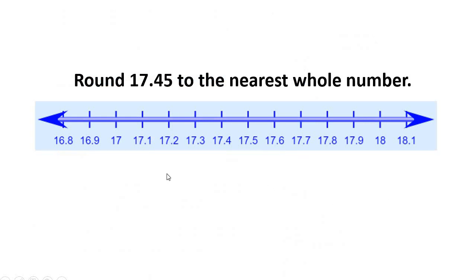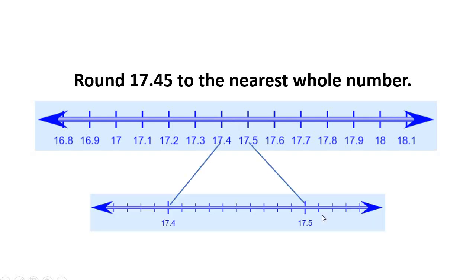Let's try another one. We're going to round seventeen and forty-five hundredths to the nearest whole number — using the number line first. This number line is counting by tenths, and the number I'm trying to find is in the hundredths place. So I'm going to have to zoom in on my tenths number line to figure out where this goes. It's going to be bigger than seventeen and four tenths, but smaller than seventeen and five tenths. I can think about seventeen and four tenths as forty hundredths and the other as fifty hundredths. Now I'm going to figure out where seventeen point four five is: forty, forty-one, forty-two, forty-three, forty-four, forty-five.